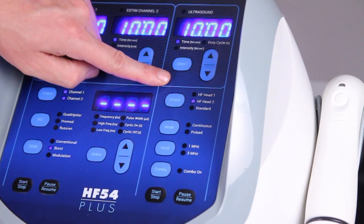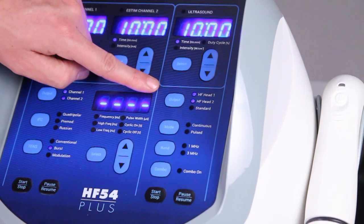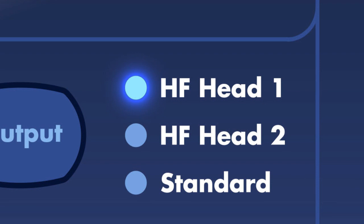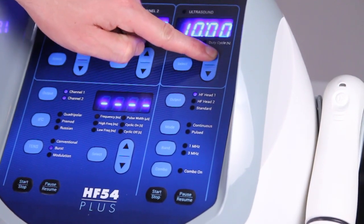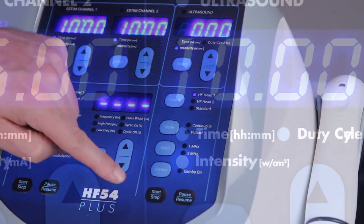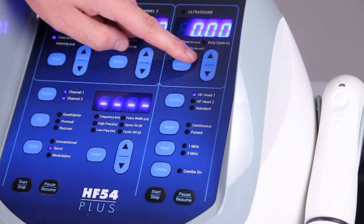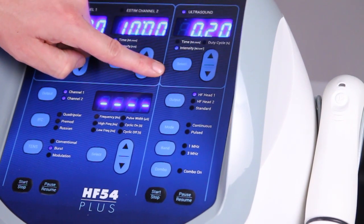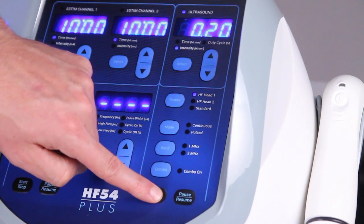To treat with ultrasound, you may select one or two sound heads at the same time. To use a single sound head, select HF head number one, then adjust the time using the up and down arrows. Press the start stop button to begin the treatment. The intensity indicator will light automatically as the treatment starts. Ultrasound intensity can only be adjusted during treatment using the up or down arrows. Press the start stop button at any time to stop the treatment.